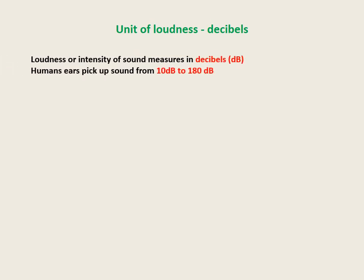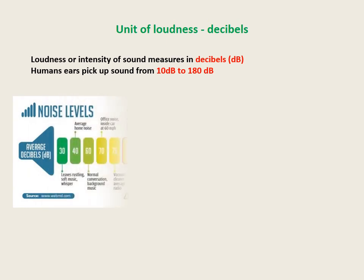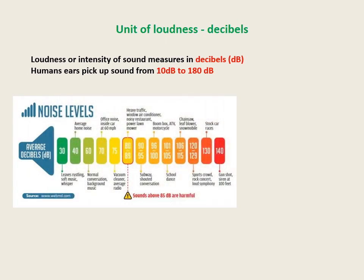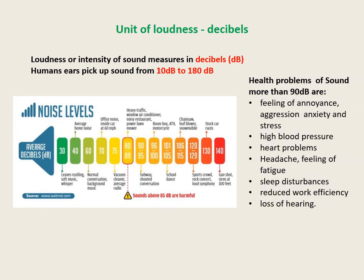Unit of loudness. The loudness or intensity of a sound is measured in decibels (dB). Human ears can pick up sound from 10 dB to 180 dB. A sound between 50 dB and 60 dB is considered normal. Sounds up to 80 dB can be tolerated, while sounds above 80 dB can have harmful effects. A sound of about 90 dB and more causes many health issues including: feeling of annoyance, aggression, anxiety and stress; high blood pressure and heart problems; headache, fatigue, and sleep disturbances; reduced work efficiency; and loss of hearing.